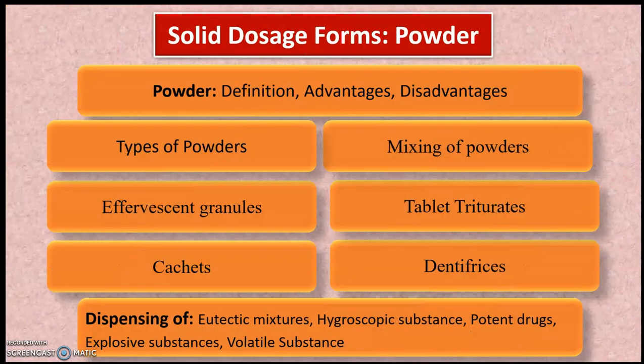The next chapter is solid dosage forms, that is powders. In this chapter, the important points you should focus on are the definition of powder, advantages of powder, and disadvantages of powder. The next important point is the types of cachets, then effervescent granules. You are performing these powders in practicals also, so these basic things you should know, as it will be helpful from both theory and practical point of view. The most important point from your final exam perspective is the cachets.